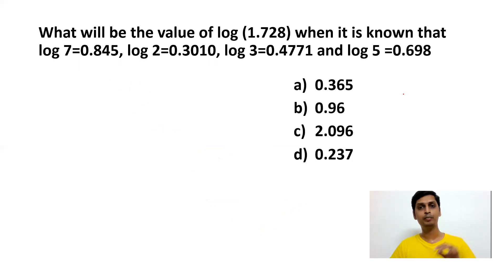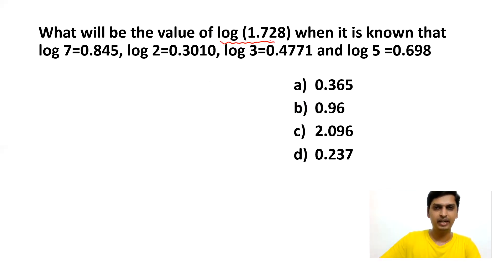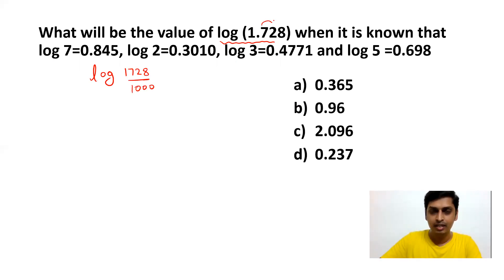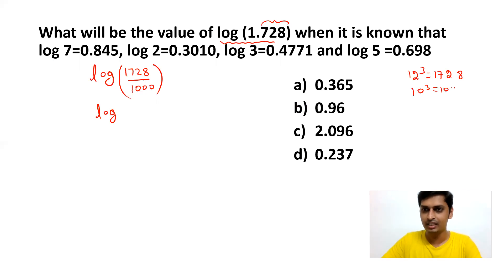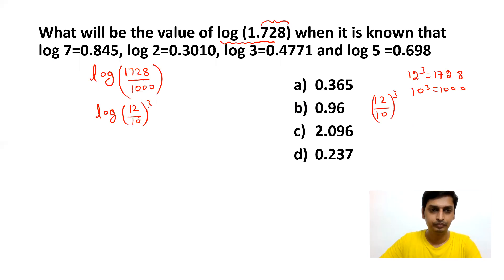Next question: What is the value of log 1.728 given that log 2, log 3, log 5, and log 7 values are known? Always convert decimals to fractions first. log 1.728 = log(1728/1000). Now, 12³ = 1728 and 10³ = 1000, so 1728/1000 = (12/10)³. Therefore log(1728/1000) = log((12/10)³) = 3 × log(12/10).